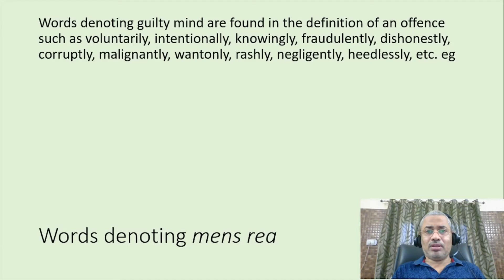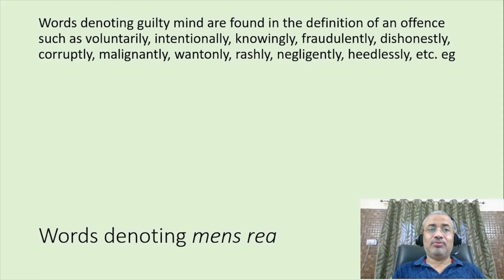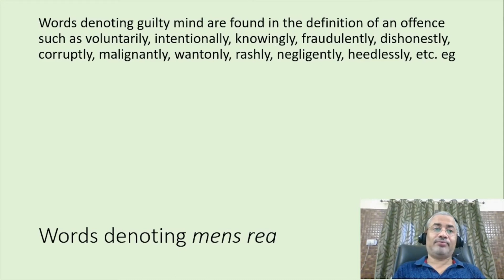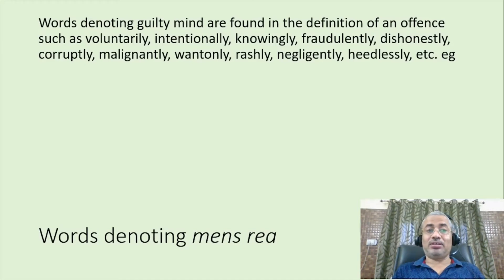In an act, mens rea is indicated by specific words. Words denoting guilty mind are found in the definition of an offence such as: voluntarily, intentionally, knowingly, fraudulently, dishonestly, corruptly, malignantly, wantonly, rashly, negligently, heedlessly, etc.